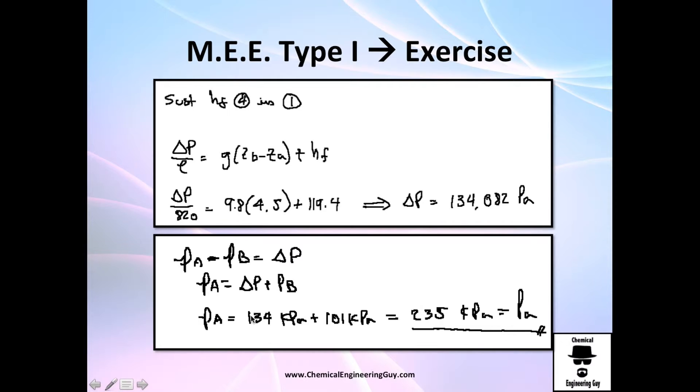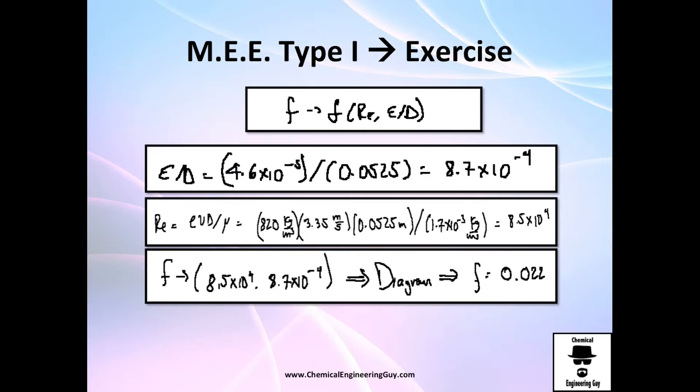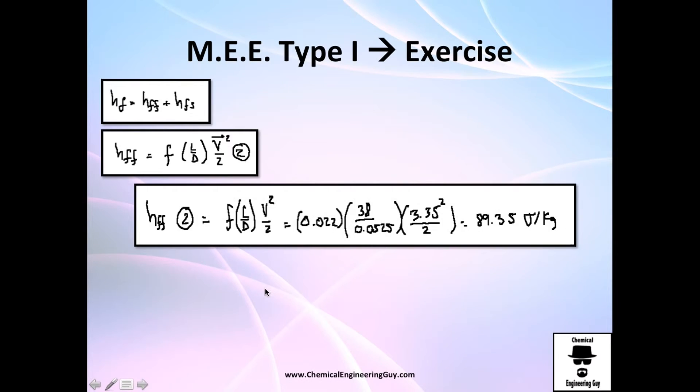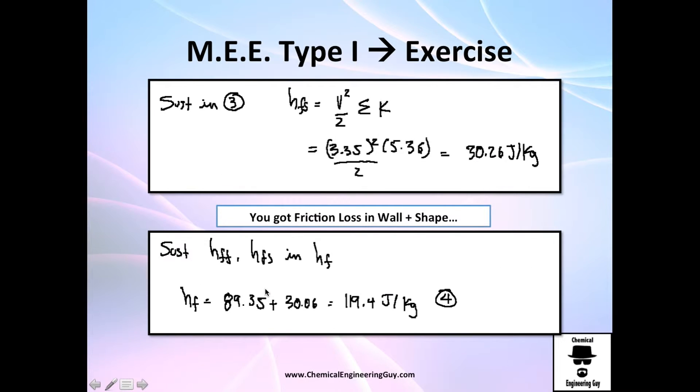And let me substitute equation number 4 in equation number 1, which is the first equation I got right here. So I got this right now already calculated. The height I have it. Gravity is constant. Density is given. And the PB is 1 atmosphere. So I got everything. Let's solve for PA.